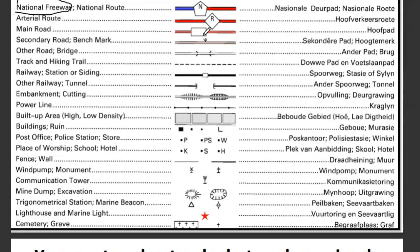The benchmark is this symbol here. Other symbols include the bridge, tracking and hiking trail, railway station, and the halt railway station or siding — shown by a black color symbol. The embankment and cutting are also shown differently. The power line is another symbol. A post office is abbreviated 'P', police station is 'PS', and a store is 'W'. A place of worship is 'K', school is 'S', and hotel is 'H'.